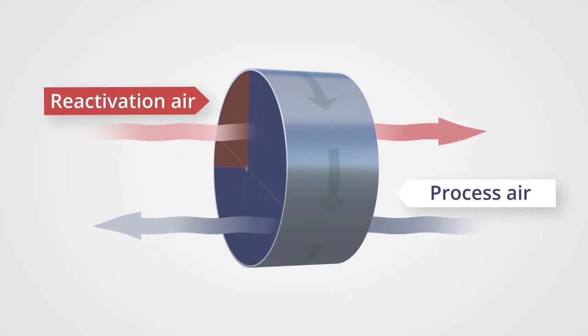As this wheel rotates, moisture is being removed from the process air, which drops the grains of moisture per pound and in turn reduces the relative humidity.